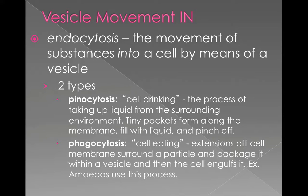Alternatively, phagocytosis has to do with the cell eating — taking in solids. Extensions of the cell membrane surround a particle, package it in a vesicle, and engulf it. Amoebas use this process. We also have phagocytes in our body that travel around taking in foreign substances and breaking them down. So pinocytosis and phagocytosis are both types of endocytosis — pinocytosis for liquid, phagocytosis for solids.